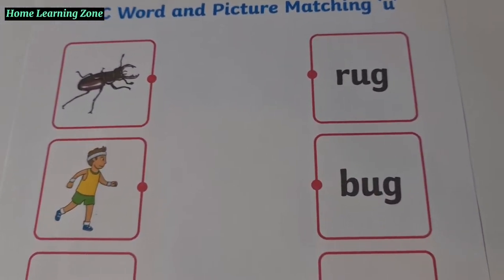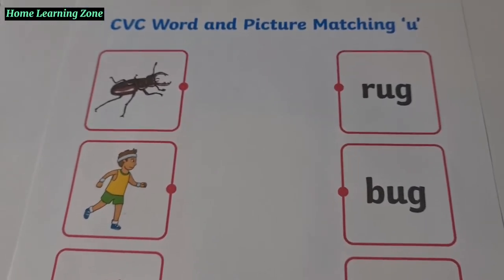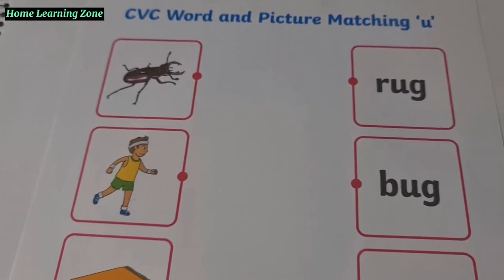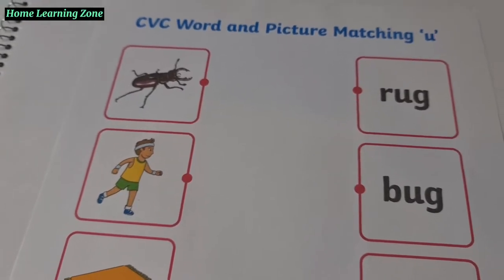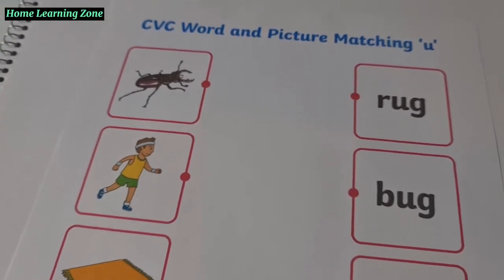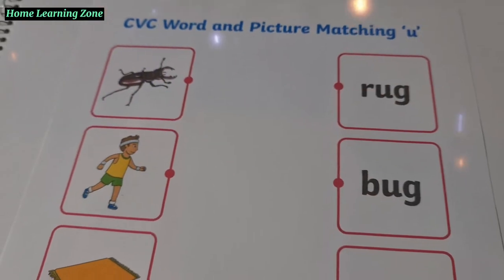Okay, Bria, let's match some words that have the O sound in the middle. Which letter says O? U. U. The short sound of letter U is O.